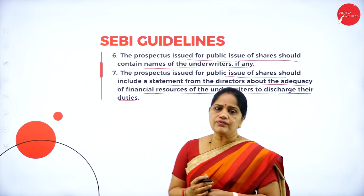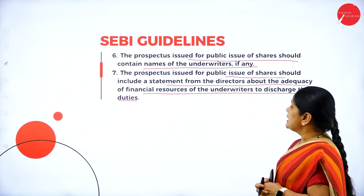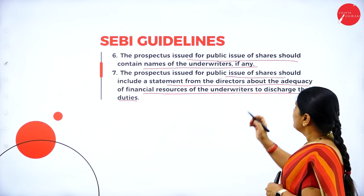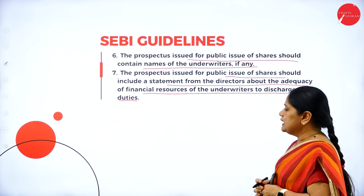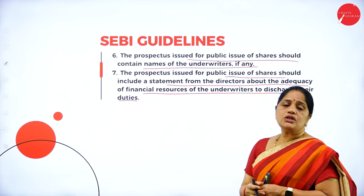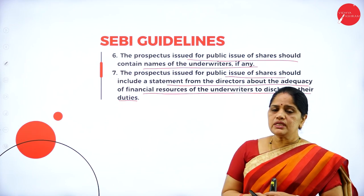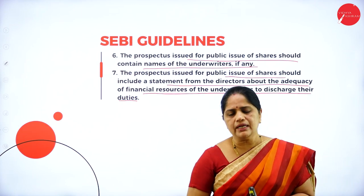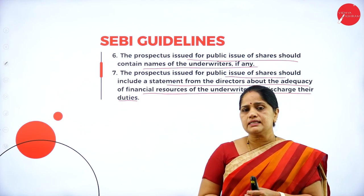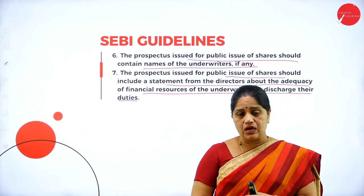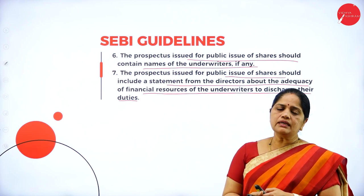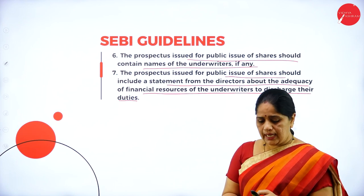SEBI has also made it mandatory that the prospectus issued for public issue of shares should include a statement from the directors about the adequacy of the financial resources of the underwriters to discharge their duties. The directors have to issue a statement in the prospectus saying that the underwriters are financially sound and in a position to underwrite the shares.